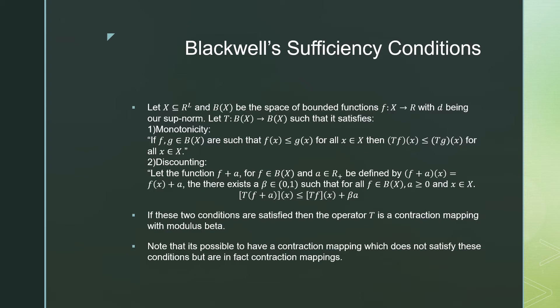And secondly, we want discounting, which is that if we make F plus A, it's going to enter in linearly, then this contraction mapping is going to take that A and scale it by a factor of beta, where beta is between 0 and 1. If these two conditions are satisfied, then we can say for certainty that T is a contraction mapping with a modulus beta.